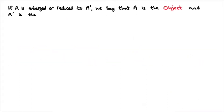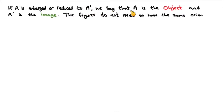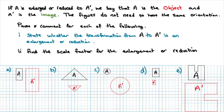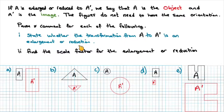Now moving on, let's look at an example. If A is enlarged or reduced to A dash, we say that A is the object and A dash is the image. The figures do not need to have the same orientation. Pause the video here and attempt to answer these two statements for each of these five questions: state whether the transformation from A to A dash is an enlargement or reduction, and find the scale factor.